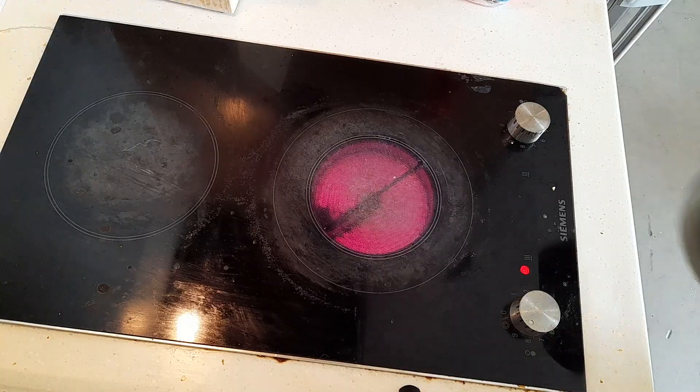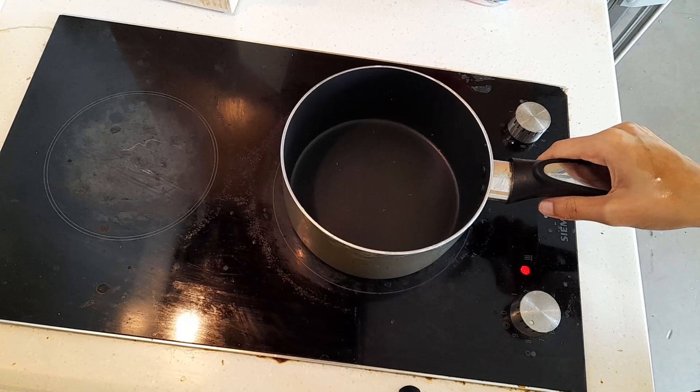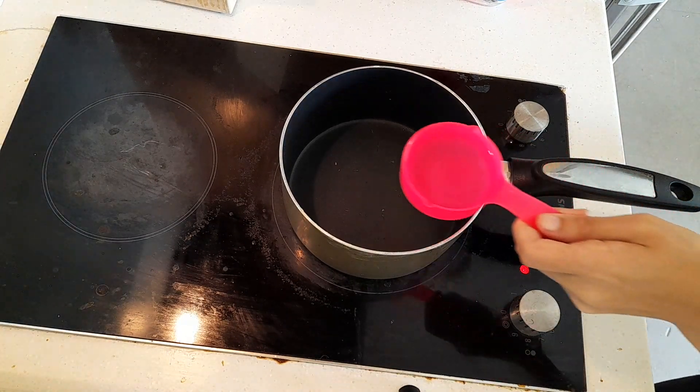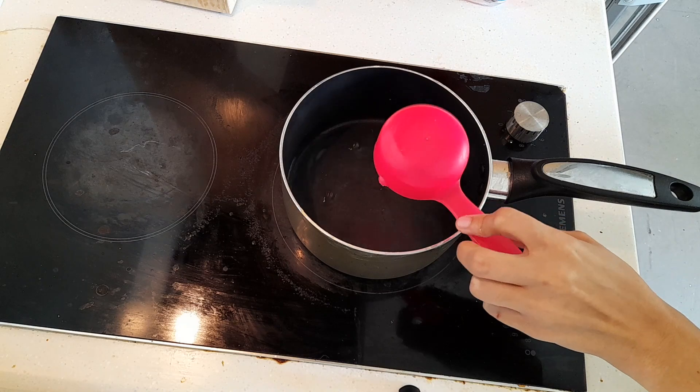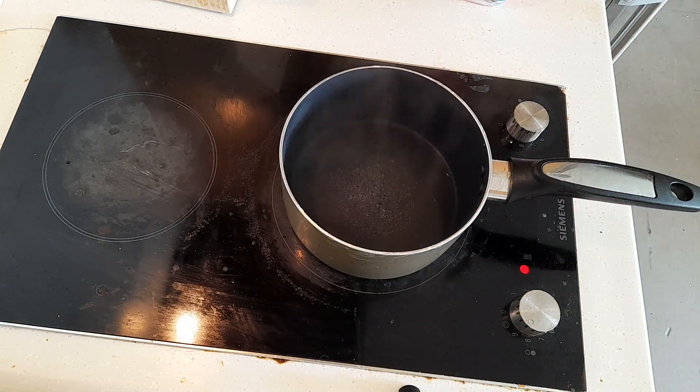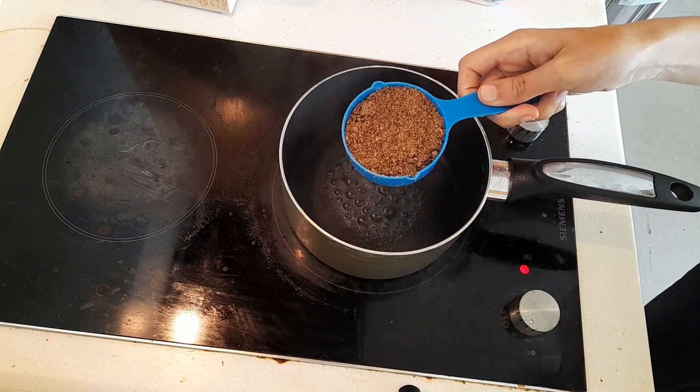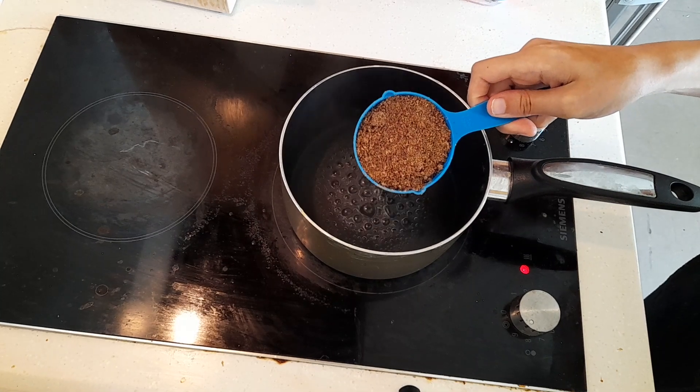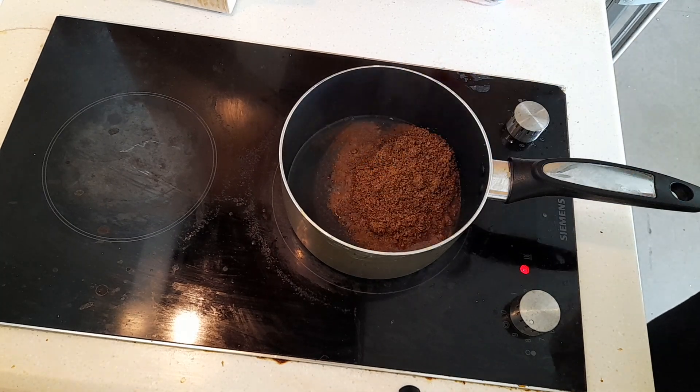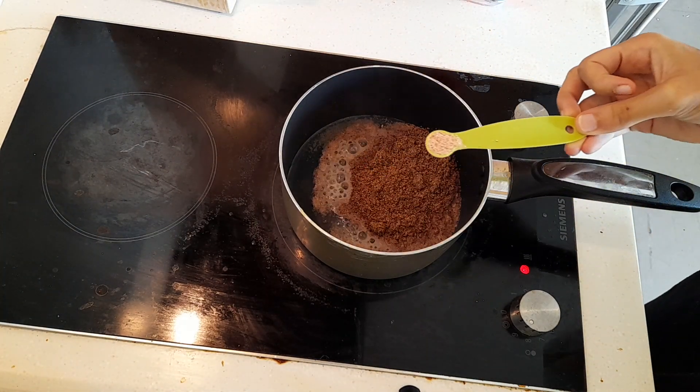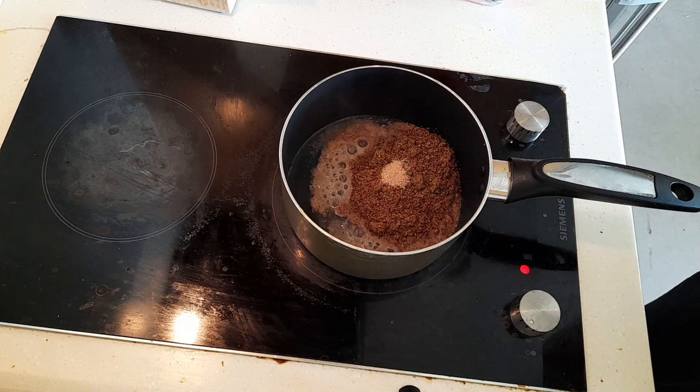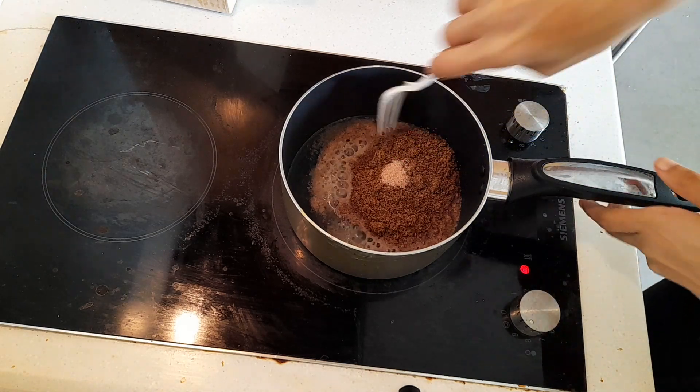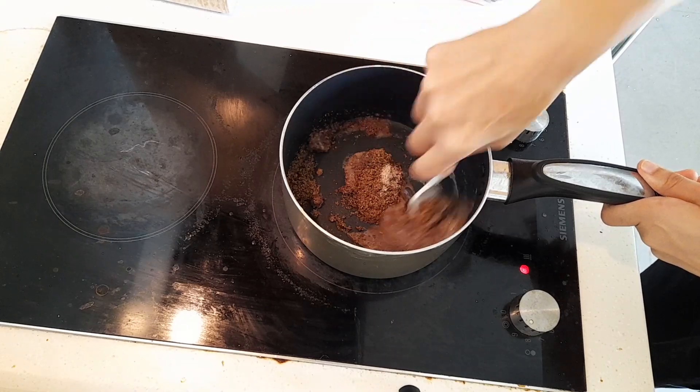The second version of this recipe is the stove version. So put a saucepan on high heat and add a third cup of water. You want to wait a minute or two for it to boil, then turn off the heat and add a half cup of ground flaxseeds. You also want to add a quarter teaspoon of salt at this point. Now mix this together until it forms a dough and no pieces are sticking to the sides of your pan.